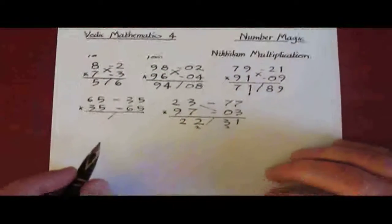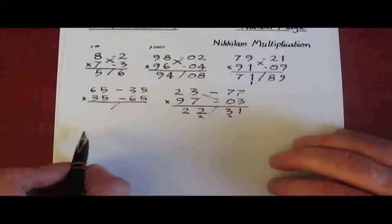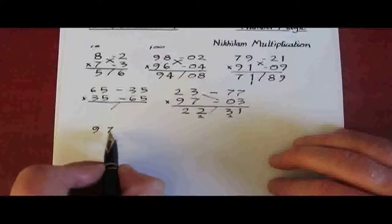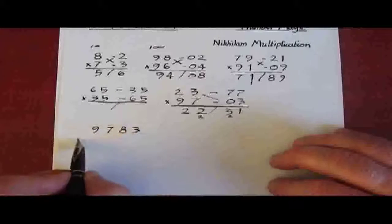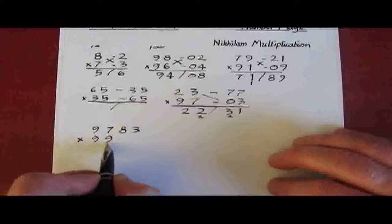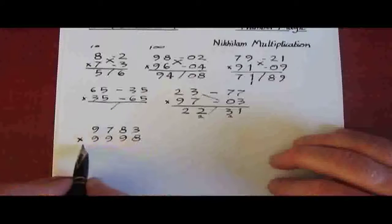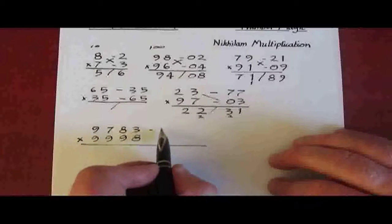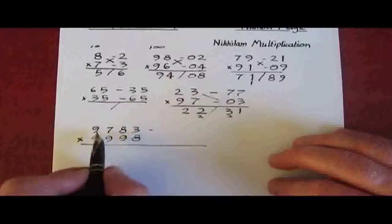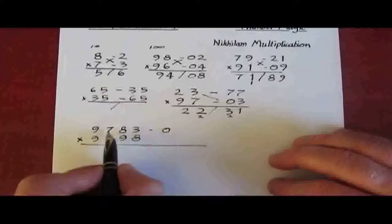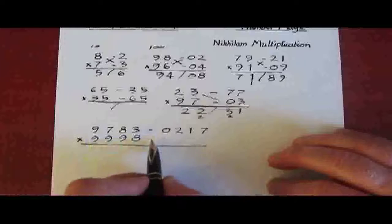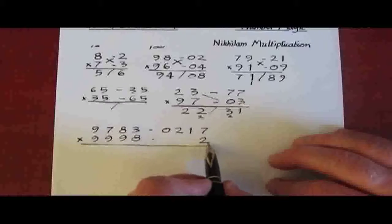And we can take it to a higher basis. For example, 9783 multiplied by 9998. Looks very nasty, but using this method it's really quite simple. All from 9 and the last from 10 gives 0217, and here we get 0002.